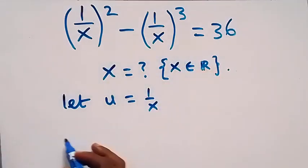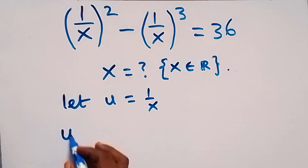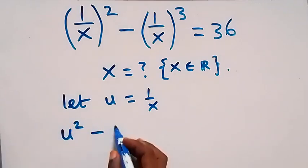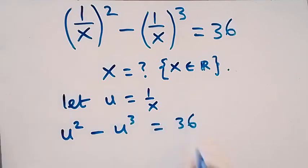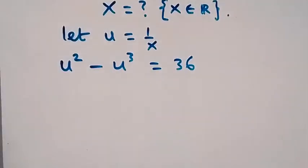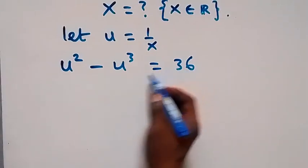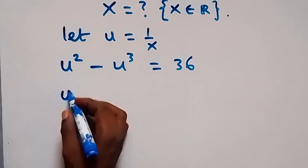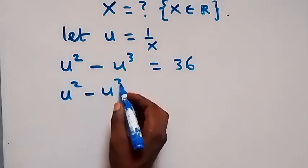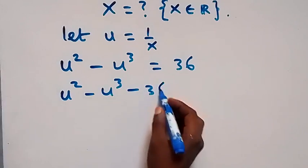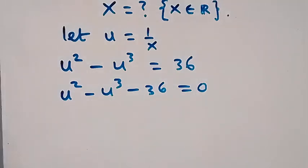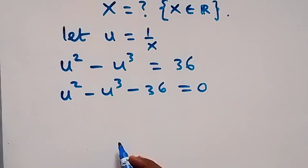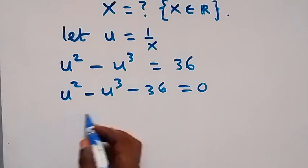Then we can rewrite the equation as u squared minus u cubed equals 36. In the next step, let's take the 36 to this side: u squared minus u cubed minus 36 will then be equal to zero.